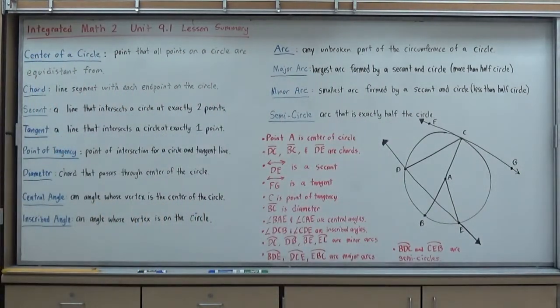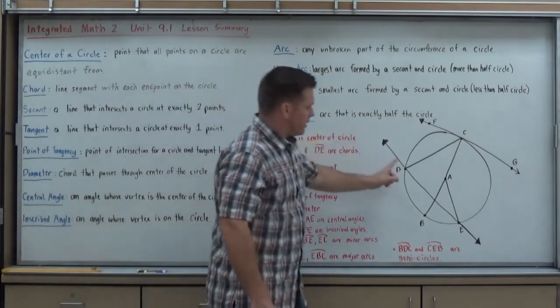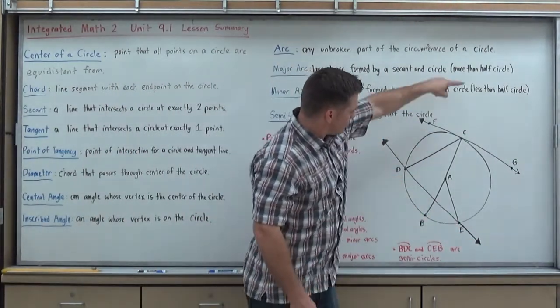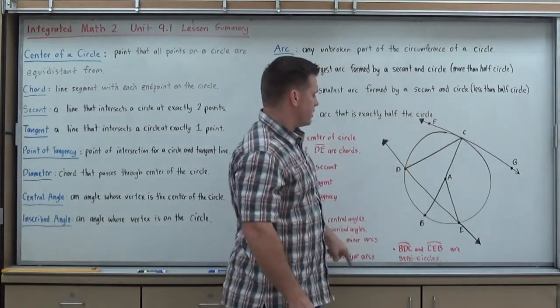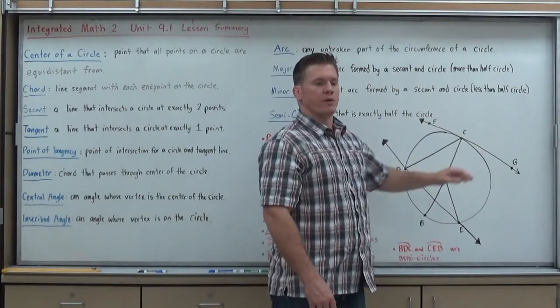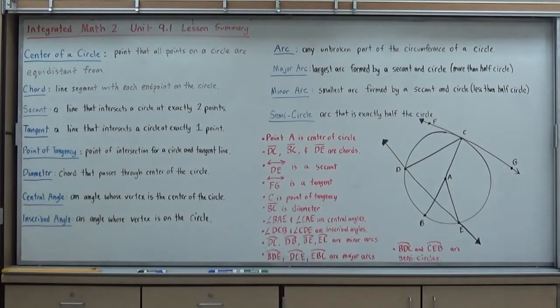A secant is a line that actually goes through the circle at two points, exactly two points. It's kind of like a chord. All secants create a chord in the circle, but the secant itself is the line that goes through it. So DE is a secant. If AC went through and extended forever, it would be a secant. DC could be a secant if it extended all the way through with arrows. But as it's drawn right now, only DE is actually a secant.